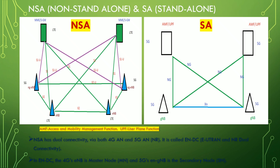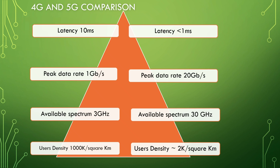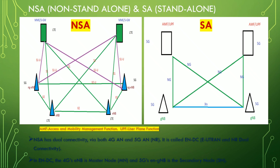In Standalone, there is no LTE legacy. 5G alone is the main node — that is gNodeB — which is connected to the 5G core, which includes AMF and UPF. We will go into more detail in the next video with the complete detailed architecture of 5G. Non-Standalone has dual connectivity via 4G and 5G access networks, which is why it is called ENDC — E-UTRAN and NR Dual Connectivity. In ENDC, the 4G NodeB is the master node and the 5G ng-eNB is the secondary node.